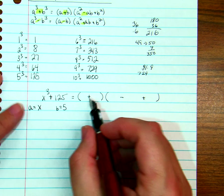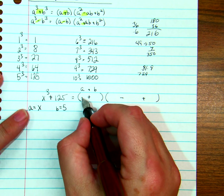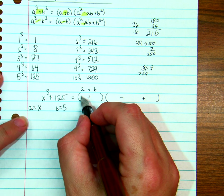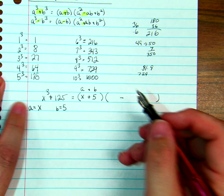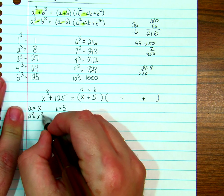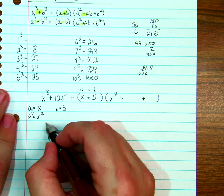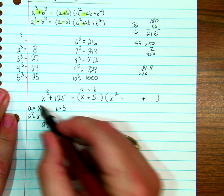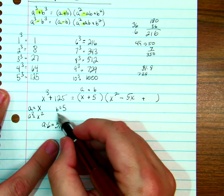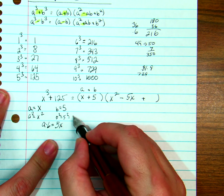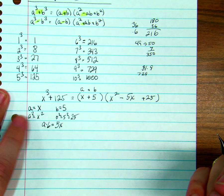Now this is going to be a and b, so a plus b. What's my a value? X. What's my b value? 5. Now I need a squared, that's x squared. And now I need a times b. What's 5 times x? 5x. And now I need b squared, which is 5 squared, which is 25. And I'm done. That's your answer.